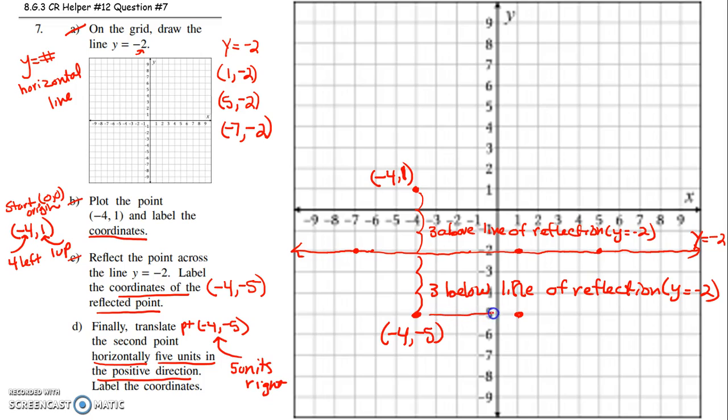Looks like 1, negative 5. There we go. Label the coordinates. The coordinates of that point was 1, negative 5. And that means we need to make sure we plot the point and then in parentheses write 1, negative 5 when they want you to label those coordinates. All right. I hope that helped.